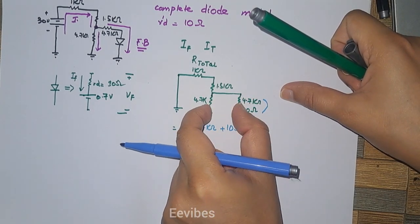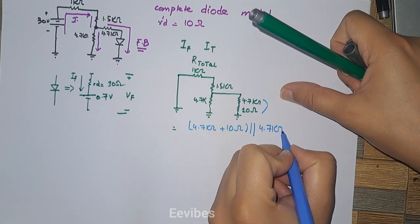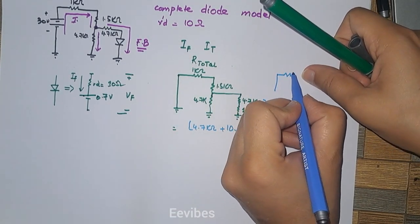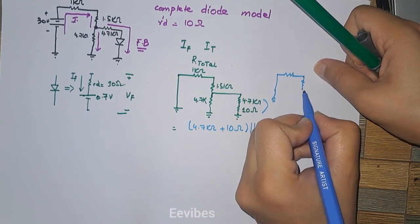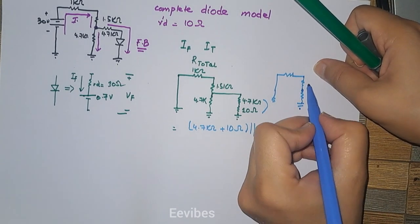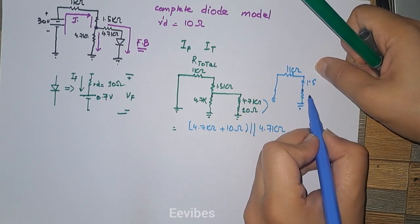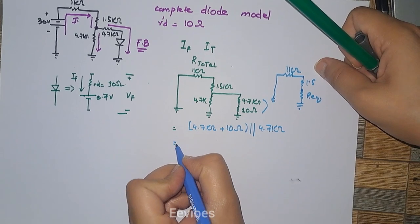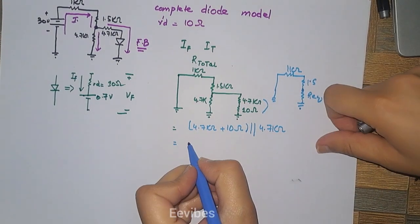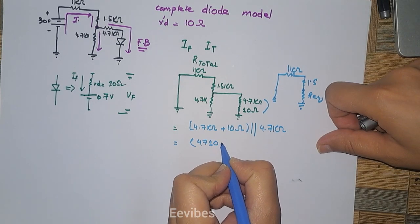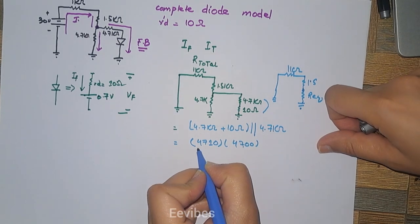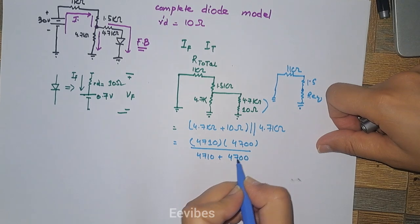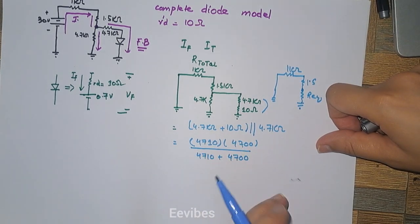This series combination of 4.7 kΩ and 10 Ω is then connected in parallel with the other 4.7 kΩ resistor. After finding the equivalent circuit, we have 1.5 kΩ and 1 kΩ remaining. To find the parallel combination, we compute: (4700 × 4710) / (4700 + 4710), adding 4710 and 4700 together for the denominator.